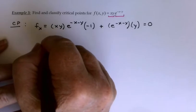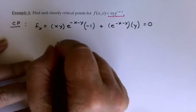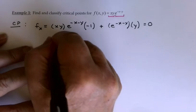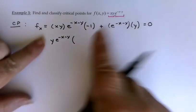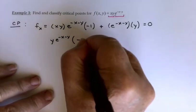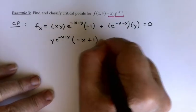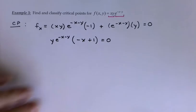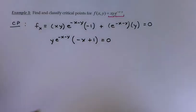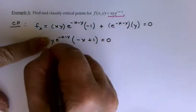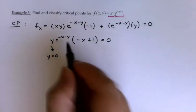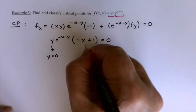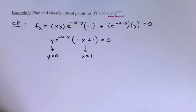I'm going to clean that up and factor it. If I factor out y·e^(-x-y), that would leave a minus x and then just a plus 1. Because of the factoring, I can solve this right now: either y equals 0, exponentials are never equal to 0 so I can skip that one, or this one gives me x equals 1. So two solutions for f_x.